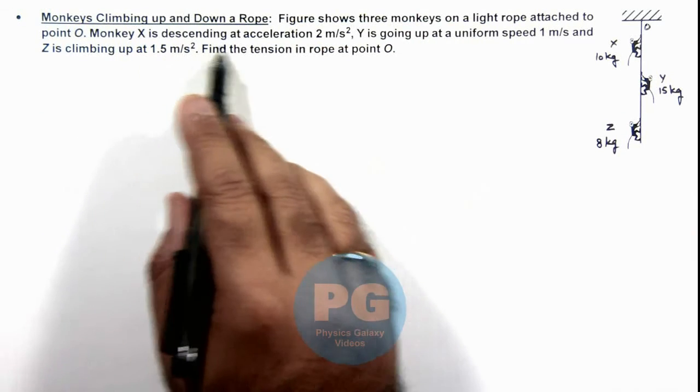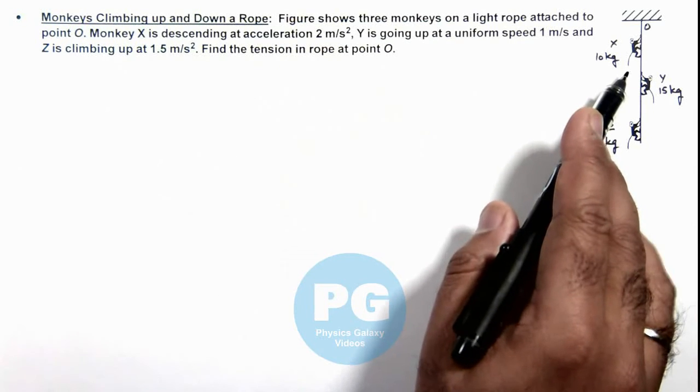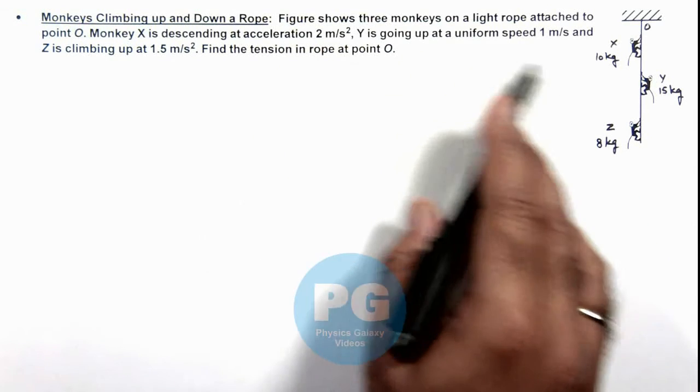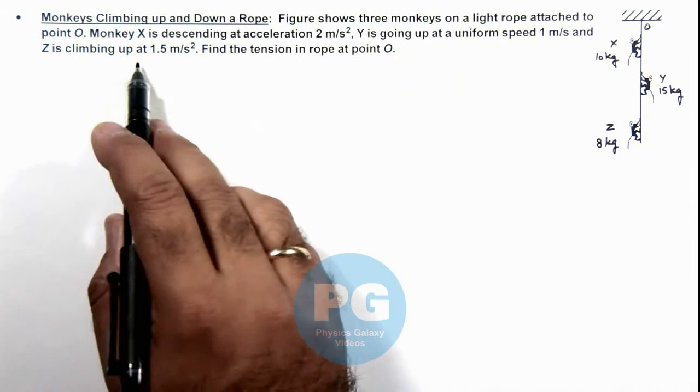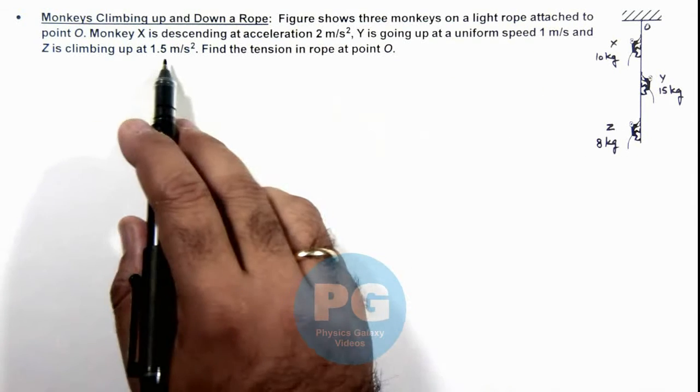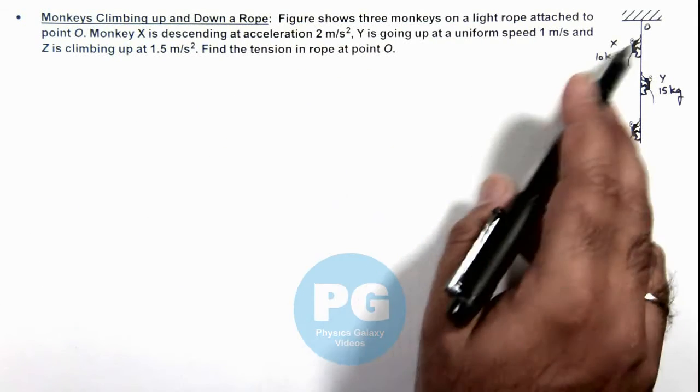Here monkey X is descending at an acceleration of 2 meters per second squared. Y is going up at a uniform speed of 1 meter per second, and Z is climbing up at 1.5 meters per second squared, and we are required to find the tension in the rope at point O.